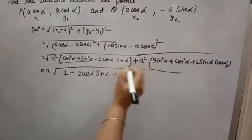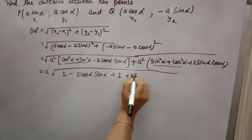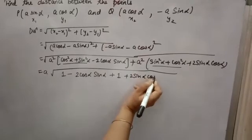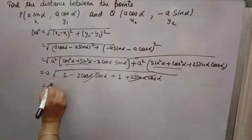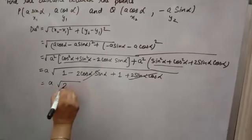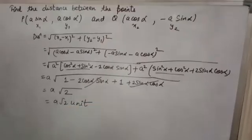A toh aapne common lehi liya. Sin square alpha plus cos square alpha, again 1, plus 2 sin alpha cos alpha. This you can cancel. 1 plus 1 is 2. So a root 2 unit is the answer. Thank you.